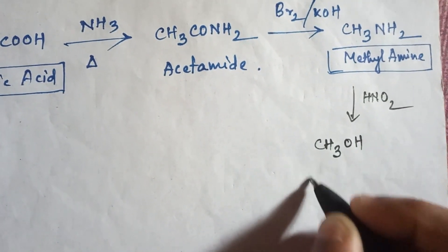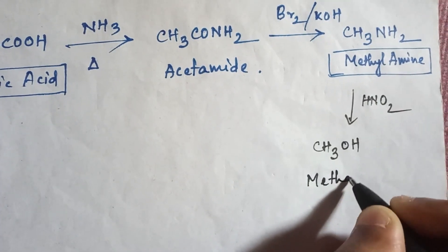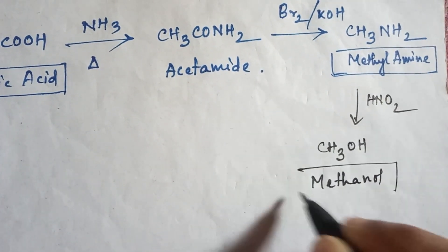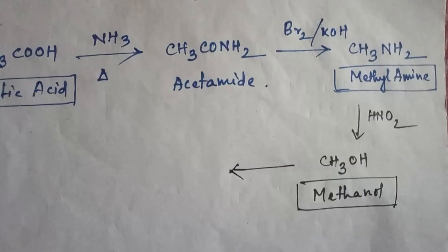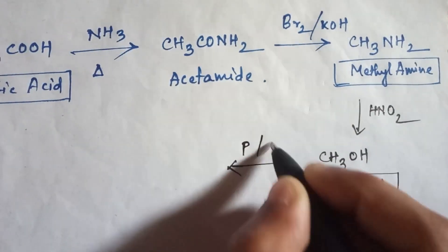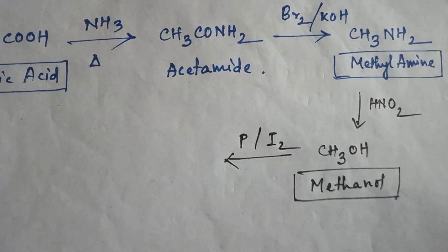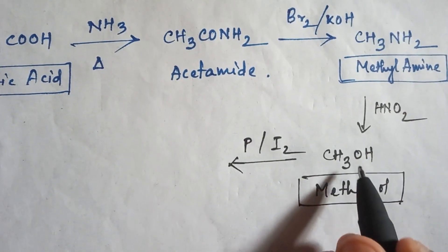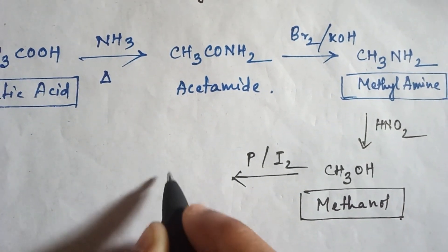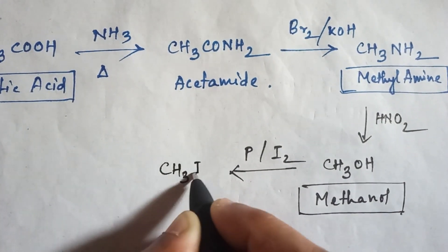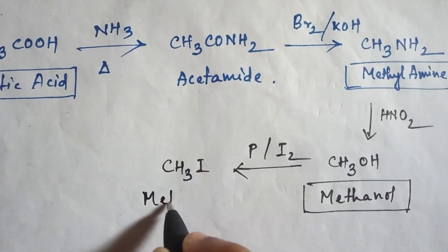Now in methanol, if you add red phosphorus and I2, then this OH group will be replaced by iodine and the product will be CH3I, that is methyl iodide.